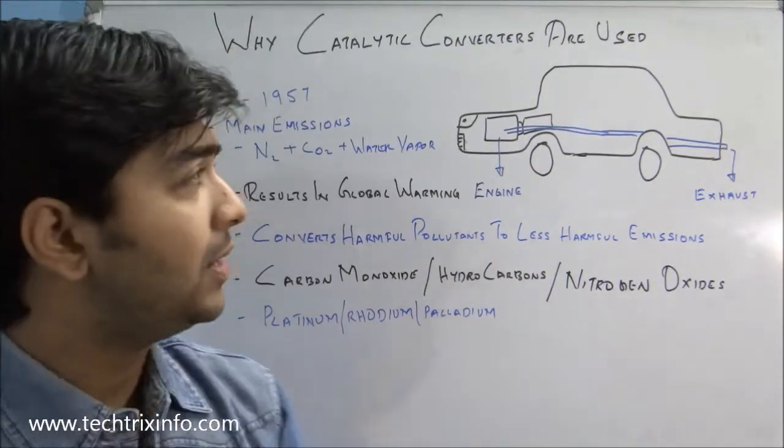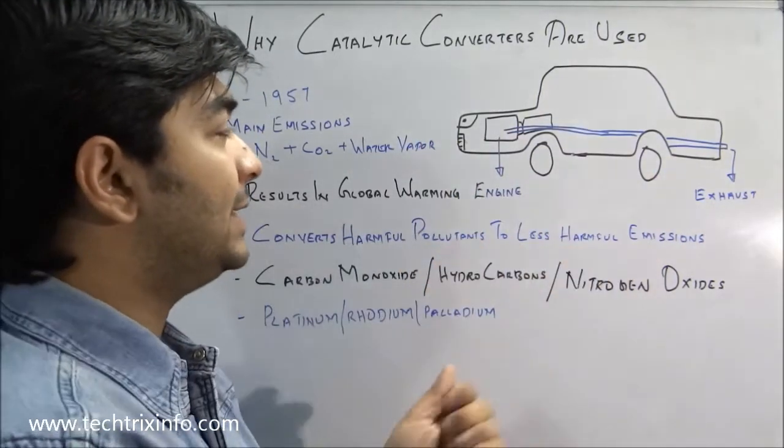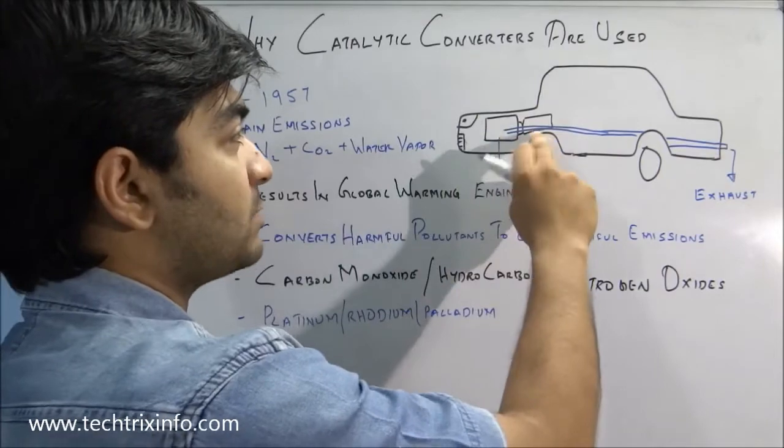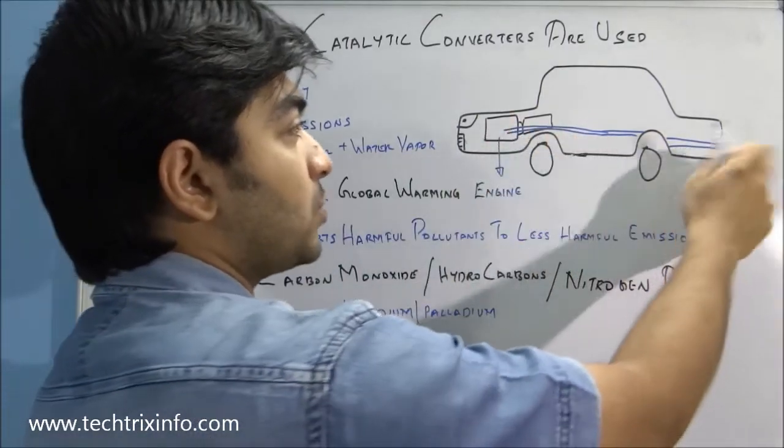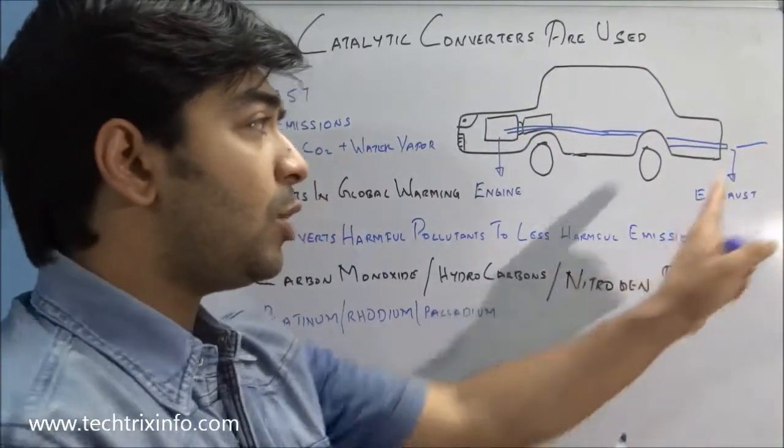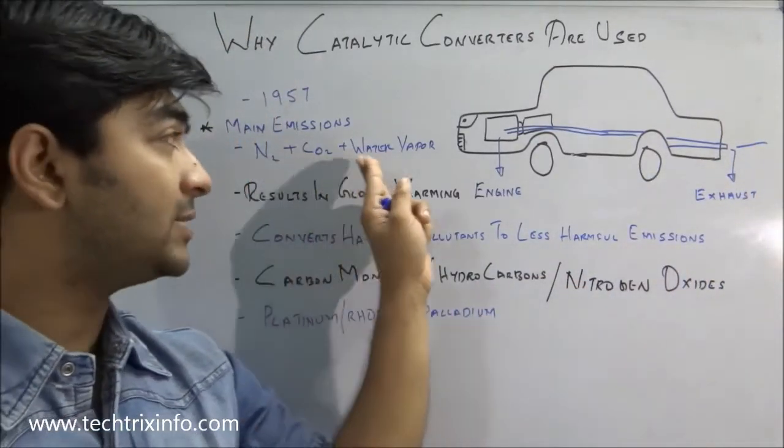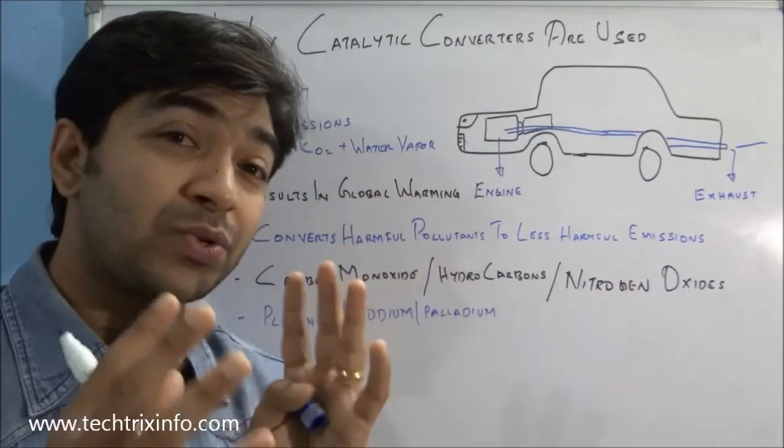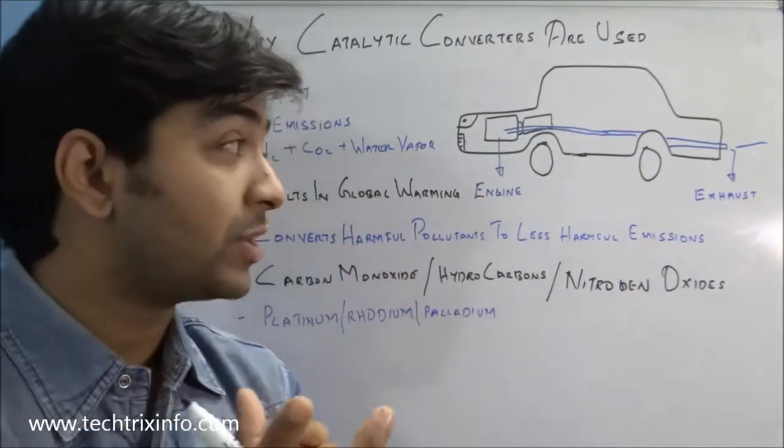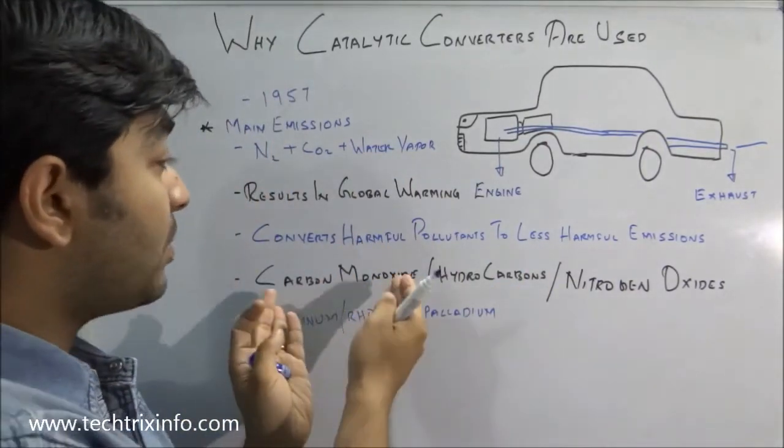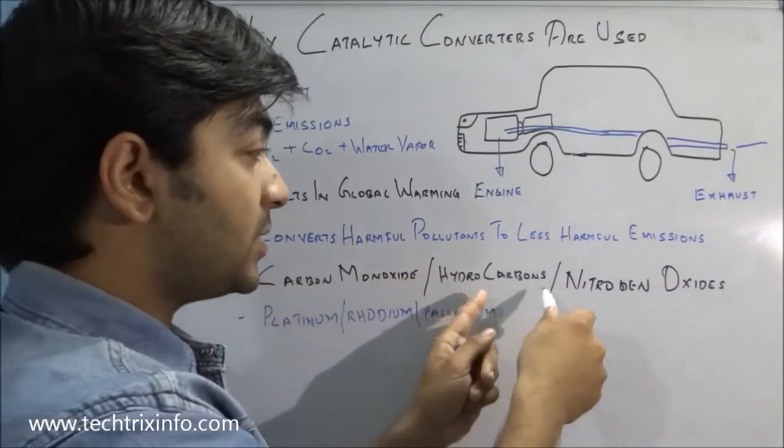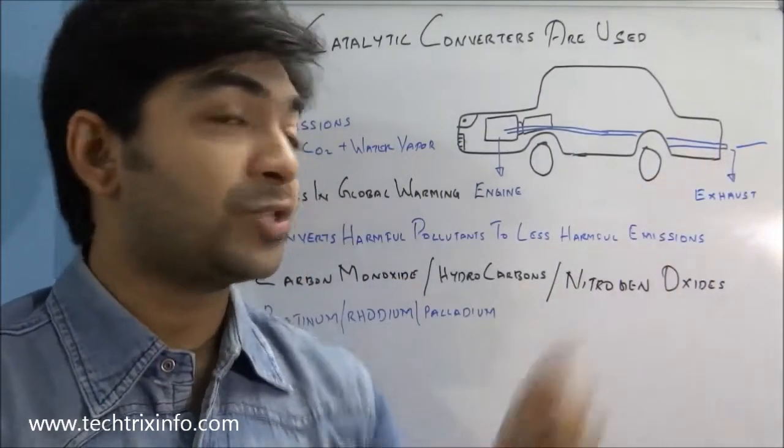In a normal automobile, we have the engine, the transmission, and from the engine the exhaust will be coming outside. Normally this exhaust will consist of nitrogen, carbon dioxide, water vapor, and also some other harmful components like carbon monoxide, hydrocarbons, and nitrogen oxides being pushed out.